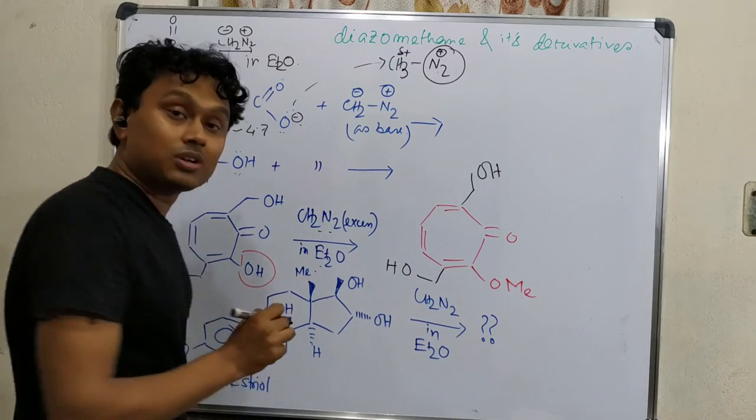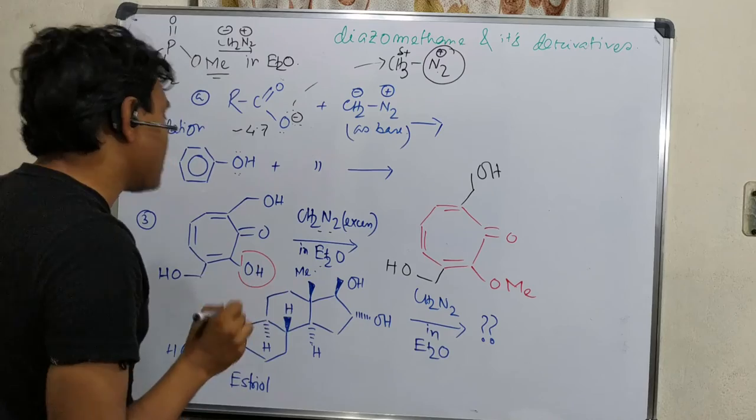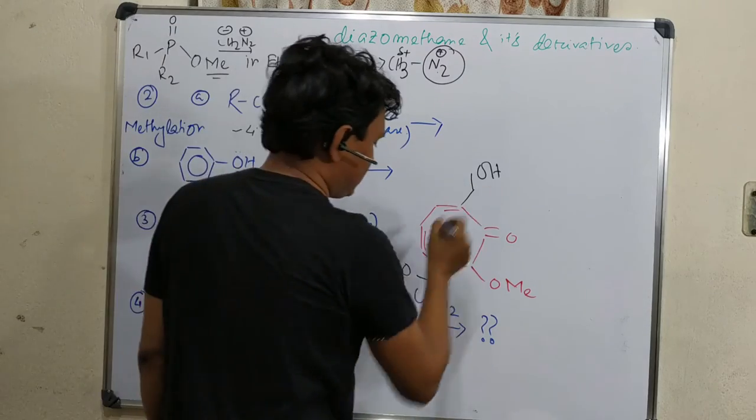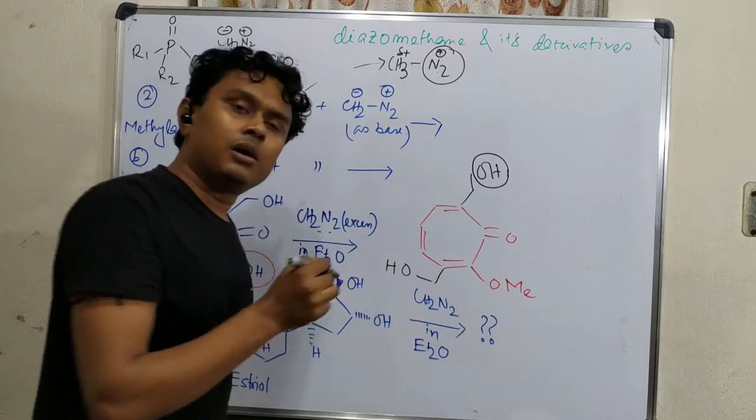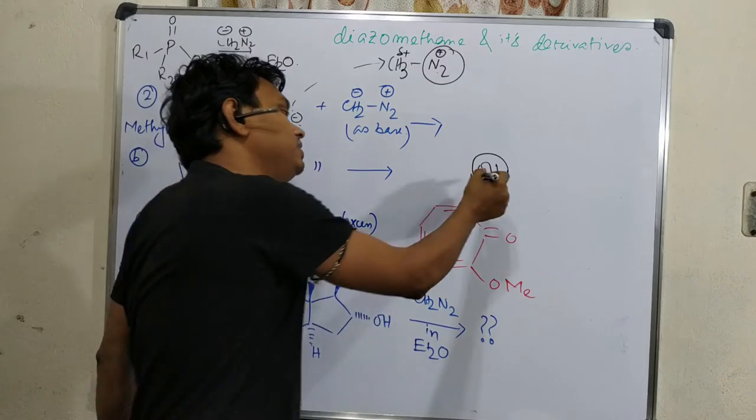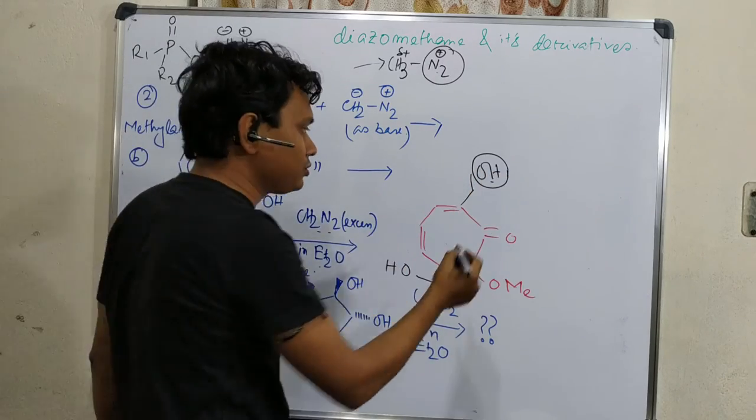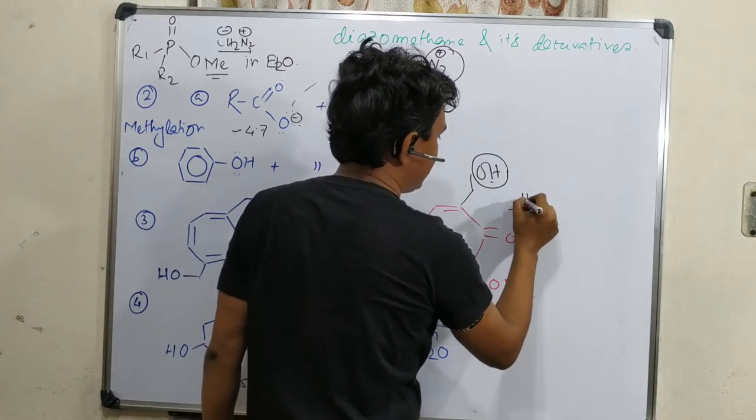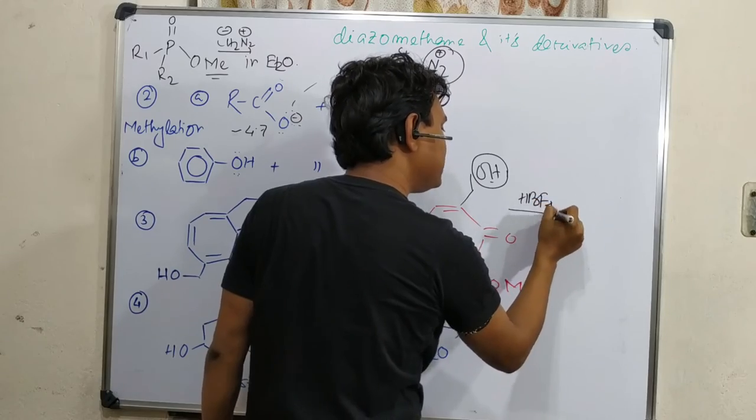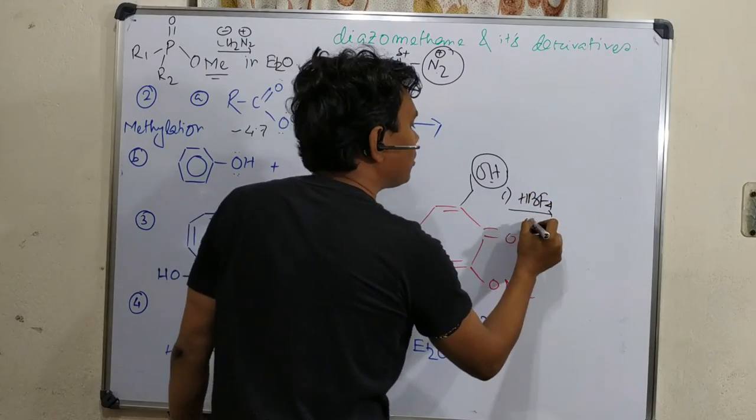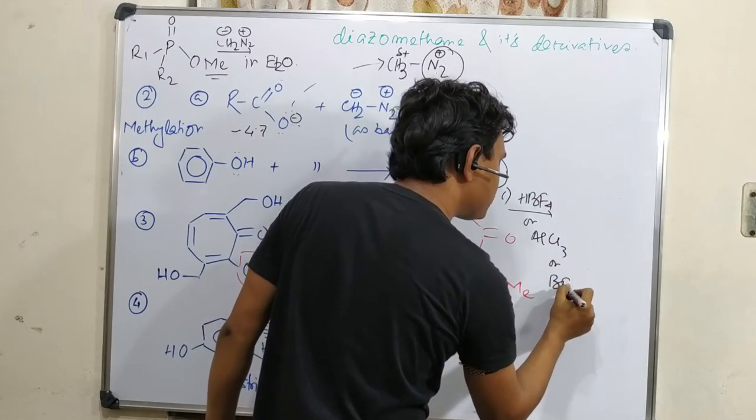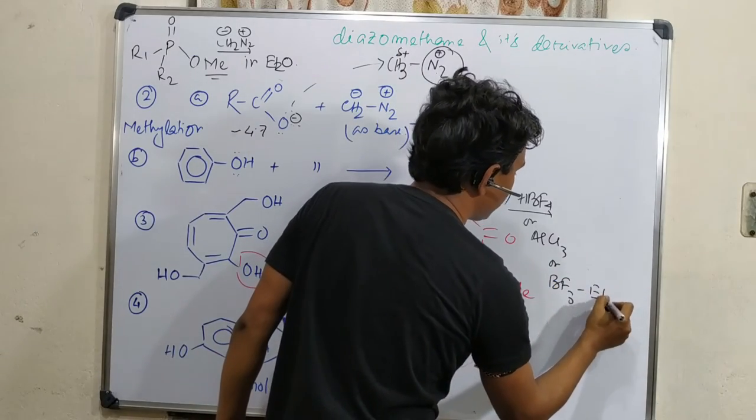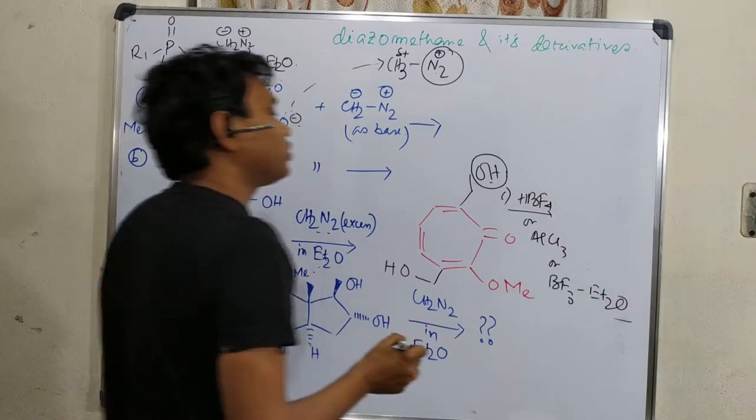Second point: if I need to further methylate or do ether formation using this, what do we need to do? Similarly like HBF4 type non-nucleophilic acid or we need Lewis acid like AlCl3 or BF3-ether type. In the presence of this, the other positions would be methylated. One of the very important applications is the alkylation of estriol.